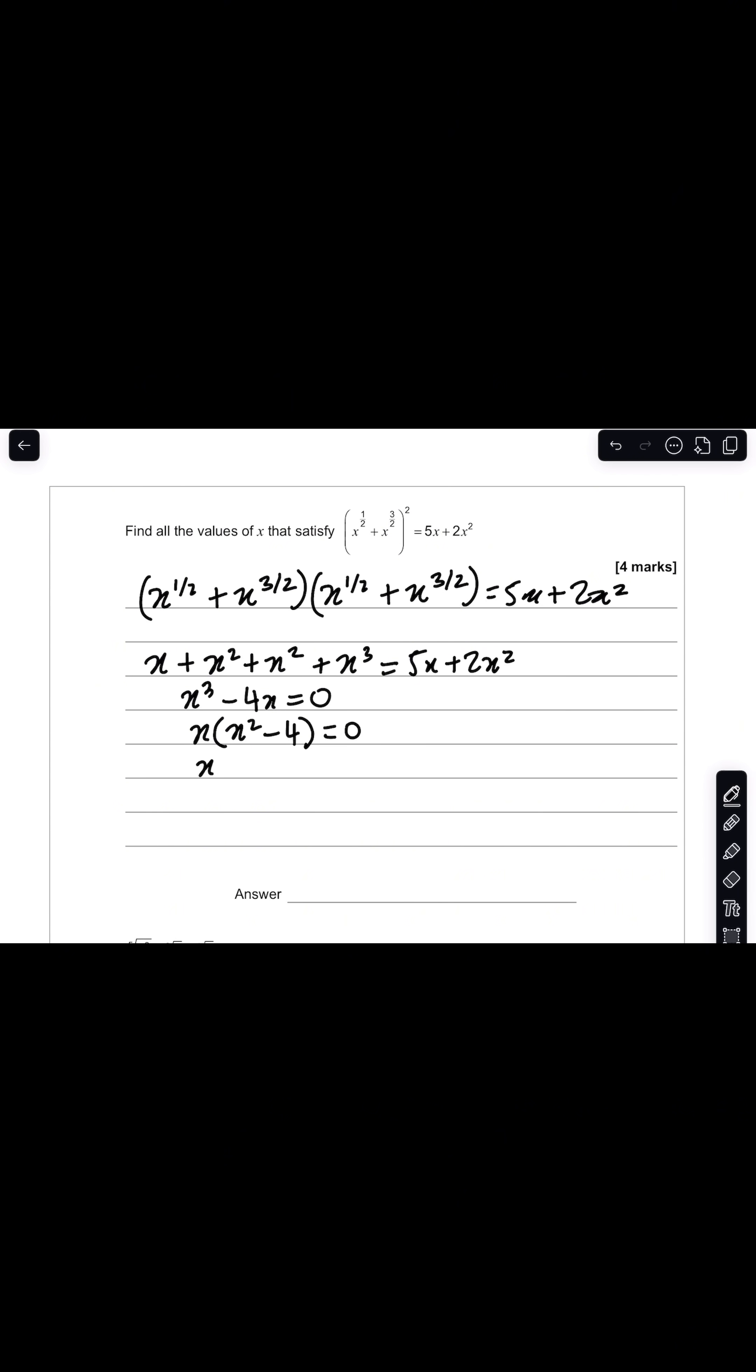So you'll notice this is a difference of two squares. So I have x times x plus 2 and x minus 2, and that equals 0.